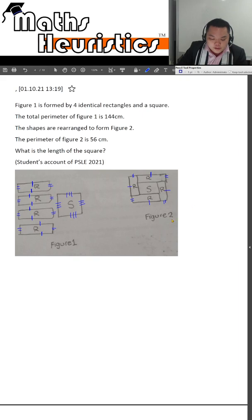So having marked out everything, you will be able to see that 4 rectangular lengths and 4 breaths add up to 56 cm.